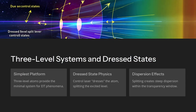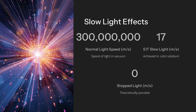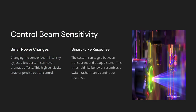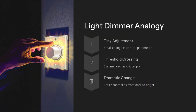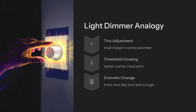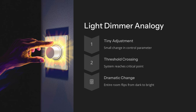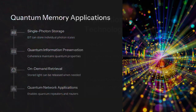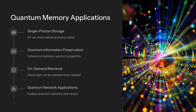At even finer scales, subtle non-linearities and cross-couplings emerge. The presence of the control field modifies the medium's refractive index so dramatically near the transparency point that group velocities can be reduced to mere meters per second or even brought to a halt. However, this slow light regime amplifies any residual absorption or dephasing, causing pulse distortion and loss. Moreover, tiny variations in control laser intensity translate into shifts of the transparency frequency, making the phenomenon highly sensitive to technical noise.